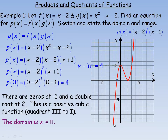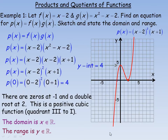Because the function goes forever to the left and forever to the right, any real number can be substituted for x. So the domain is the entire set of real numbers. Because the graph goes down forever and up forever, the range is also the entire set of real numbers.